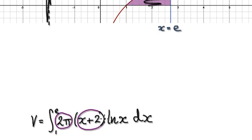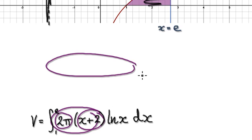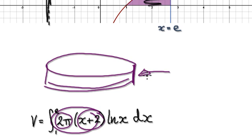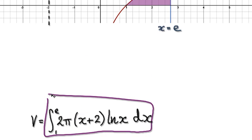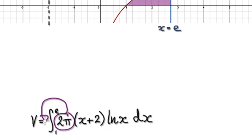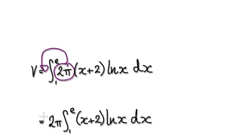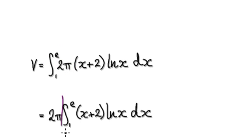So 2πr is our circumference, and the height of our shell is given by natural log of x. The volume is given by this whole integral. Now 2π here is a constant, so let's just take it out. That gives us the integral from 1 to E of (x + 2) times natural log of x dx. Now looking at this, we will need to use integration by parts.